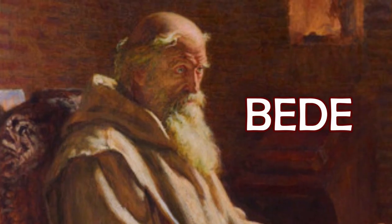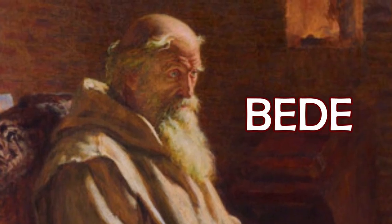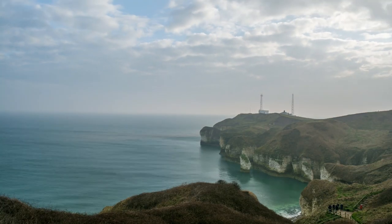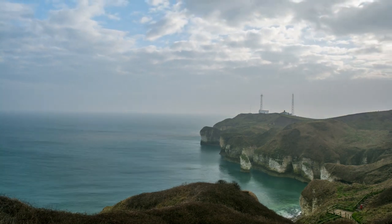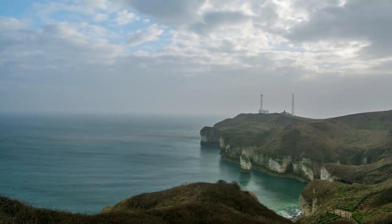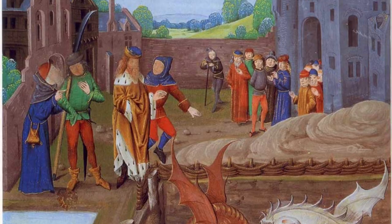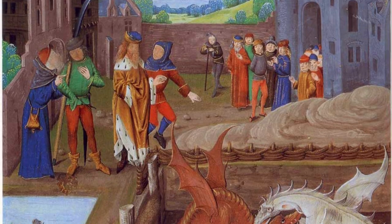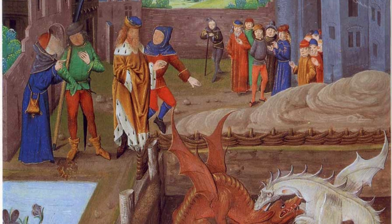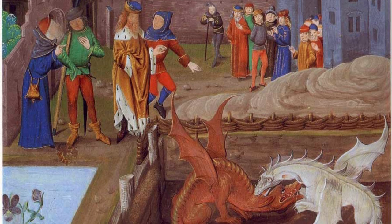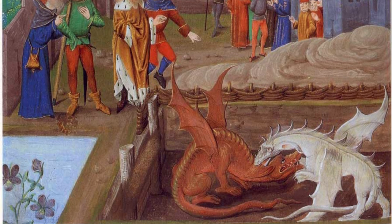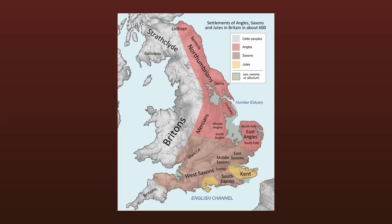Bede, an ancient English monk, wrote in the 8th century AD on the ecclesiastical history of the English people that Anglo-Saxons were initially invited by Vortigern, a king of the Britons, to fight his enemies, and they were given land in the east of modern England.